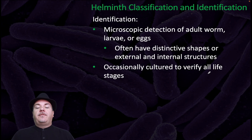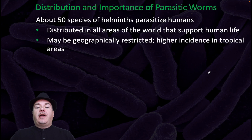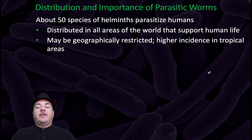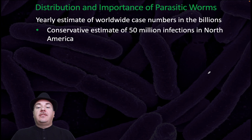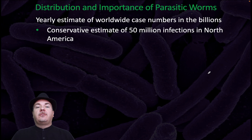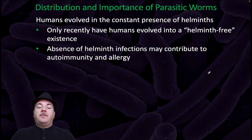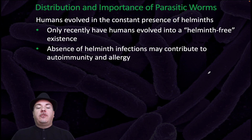There are about 50 species of Helminths that are parasites of humans, distributed in all areas of the world that support human life. Some may be geographically restricted, and you often find a higher incidence in tropical areas. Yearly estimates of infections worldwide are in the billions — a conservative estimate is about 50 million infections in North America alone per year. Humans evolved in the constant presence of Helminths, and absence of Helminth infections may contribute to autoimmunity and allergies.